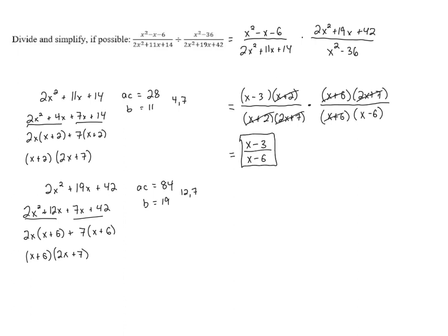When we have polynomials that need to be factored with the AC method, it certainly takes more time and more work, but the steps are generally the same. We need to be flipping that second fraction to turn it into a multiplication problem. We're factoring the polynomials, and we're canceling out any common factors.